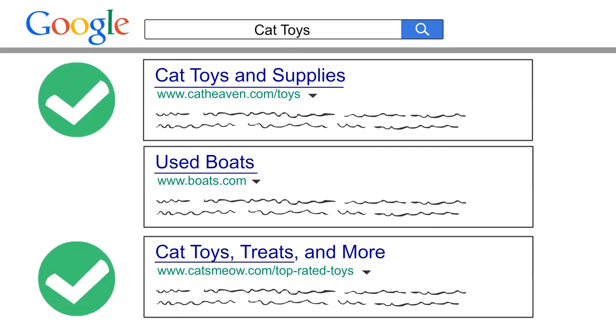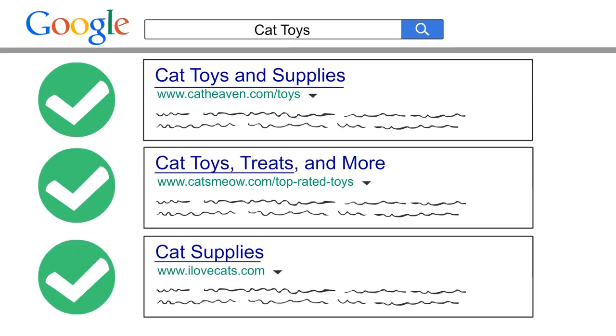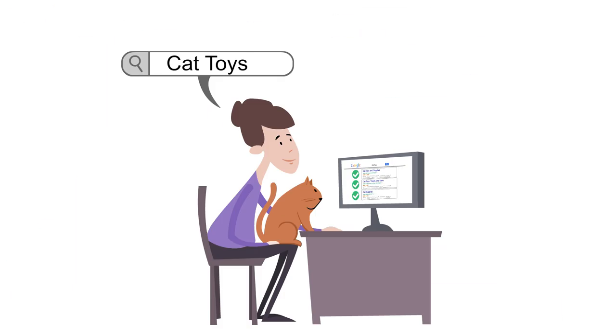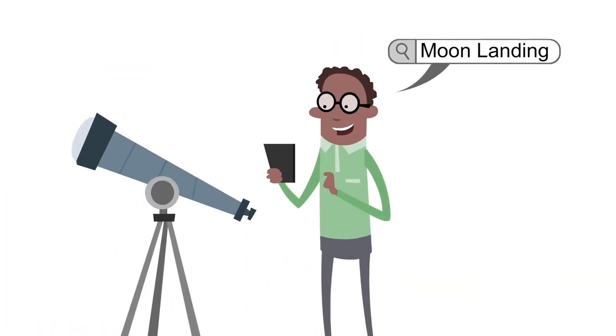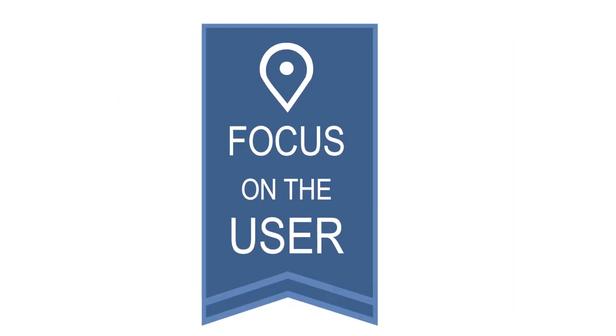And once the most relevant sources were being rewarded and delivered to the user, people came to depend on these results and lean upon Google's stated goal of focusing on users.